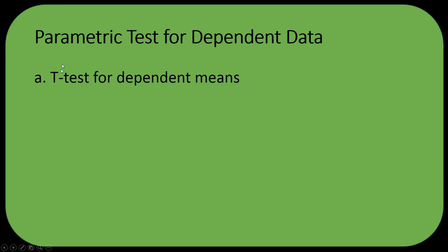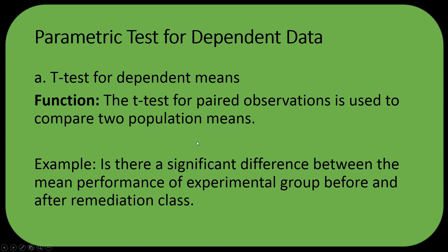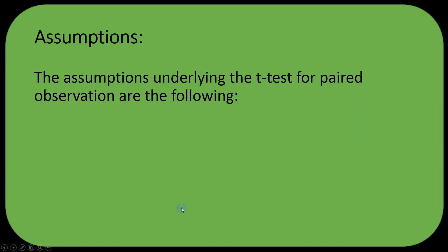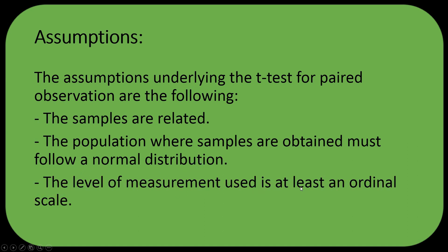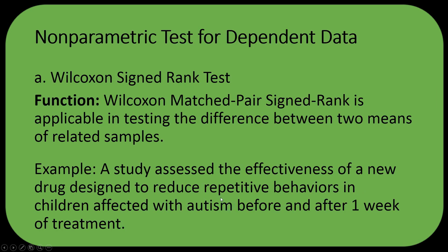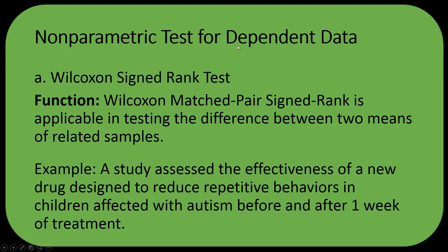For parametric tests for dependent sample, we have the t-test for dependent means. The t-test for paired observation is used to compare two population means. Example: is there a significant difference between the mean performance of an experimental group before and after a remediation class? The assumptions are: the samples are related, the population must follow a normal distribution, and the level of measurement is at least an ordinal scale.